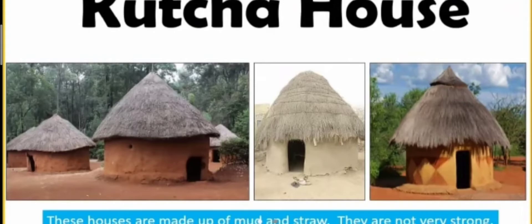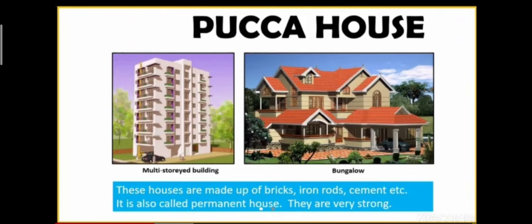Kaccha houses are also known as temporary houses as they are not very strong and they start leaking in the rainy season. Strong winds can also damage them.